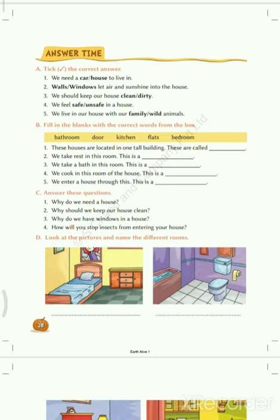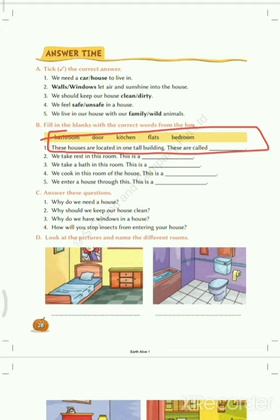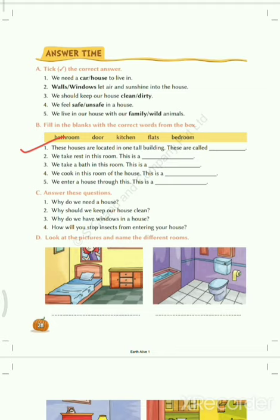Now fill in the blanks with the correct words from the box. Some words are given in this box, so we have to choose the correct words. First: these houses are located in one tall building. These are called flats. So we have to write here: flats.